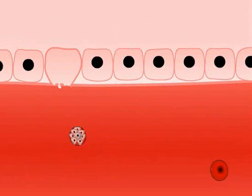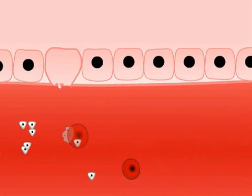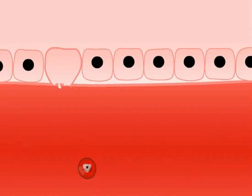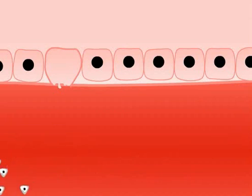As these cycles in the red cells continue, the number of parasites in the infected person increases, which leads to the onset of symptoms of the malarial illness.